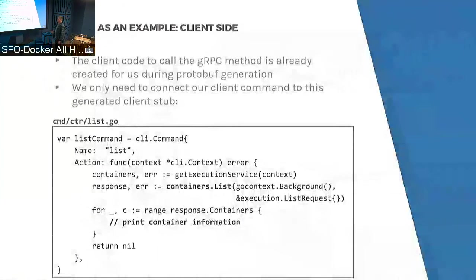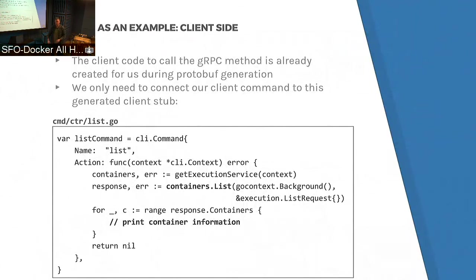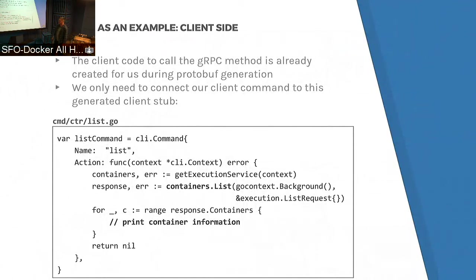On the client side, gRPC has already generated the method call for us. We have a connection that we set up, and then we're just calling containers dot list — everything else is handled in the auto-generated gRPC stubs. The list command becomes quite simple: get a connection to the service, call list, and you have your response from gRPC. All the connection and transport handling was done for us.